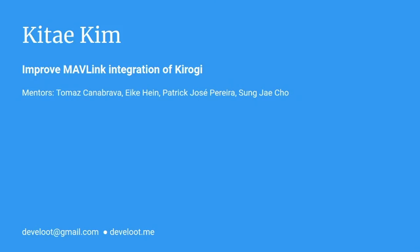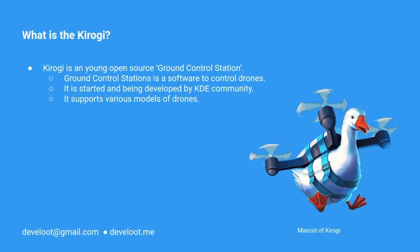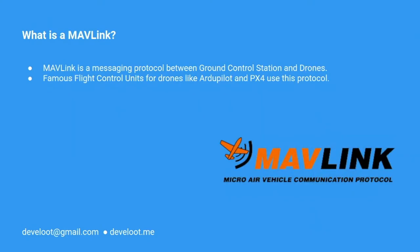Hello everyone, my name is Gita Kim. This summer I participated in Google Summer of Code with KDE, and I worked to improve MAVLink protocol integration of GiraGi. GiraGi is a young open-source ground control station — software to control drones — started and being developed by the KDE community. MAVLink is a messaging protocol between drones and ground control stations. Famous flight controllers like ArduPilot and PX4 use this protocol.